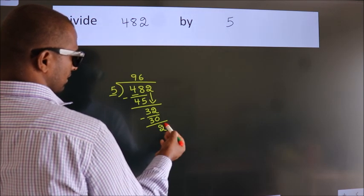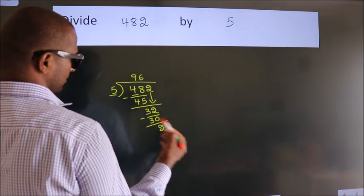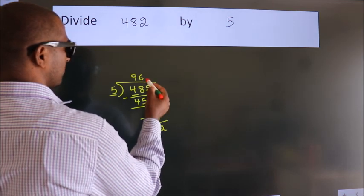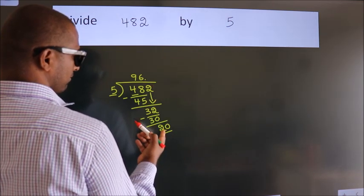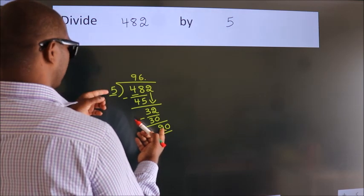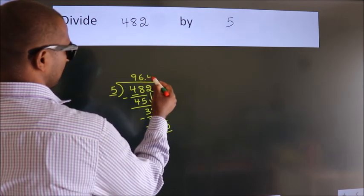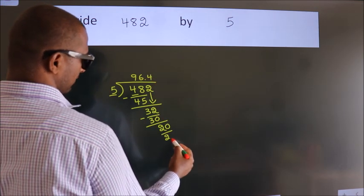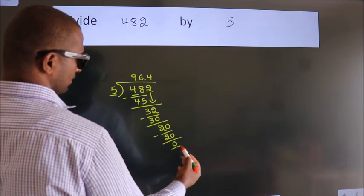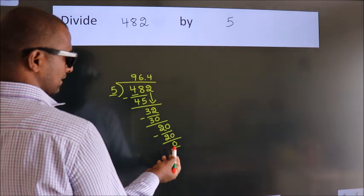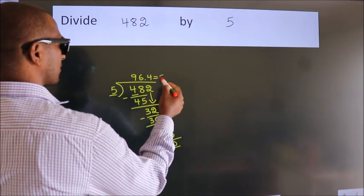After this, there are no more numbers to bring down. So what we do is put a dot and take 0, making 20. When do we get 20 in the 5 table? 5 times 4 equals 20. Now we subtract. We get 0. We got remainder 0, so this is our quotient.